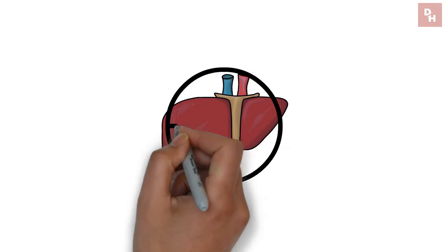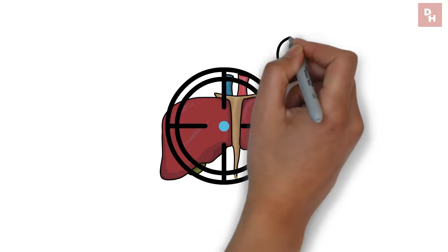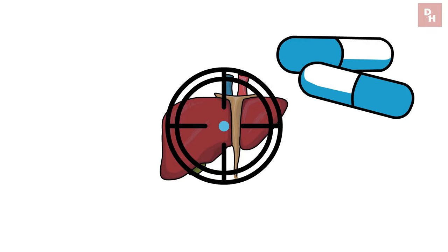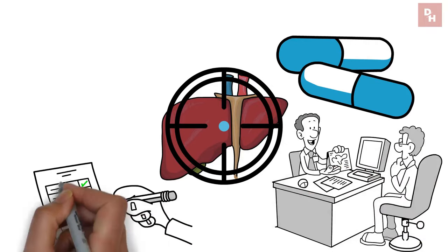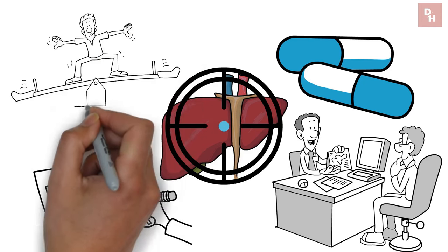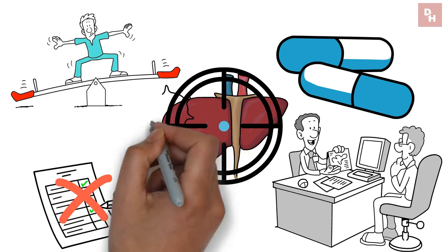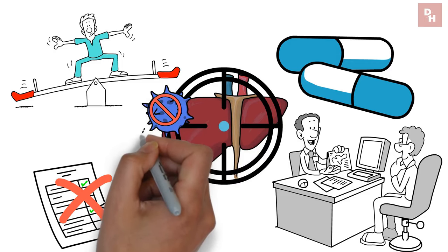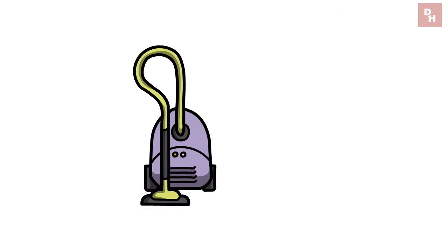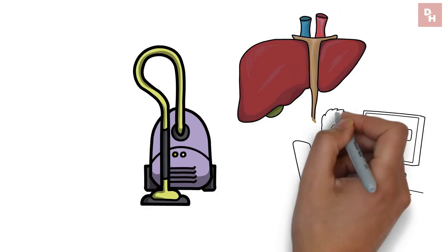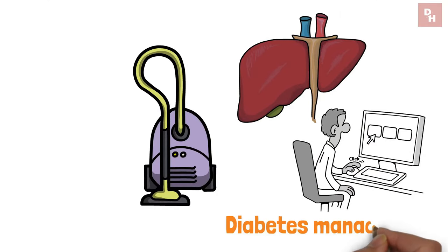That's why keeping an eye on your liver enzymes becomes crucial when you're on these medications. Think of it as a regular health checkup for your liver, making sure it's not getting more than it can handle. It's all about striking that delicate balance, effectively clearing up infections while keeping your liver out of the line of fire. Clearing infections while safeguarding your liver. Next, a popular choice for diabetes management.